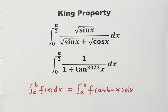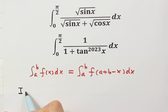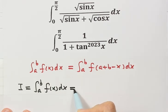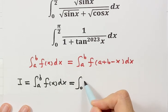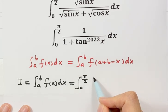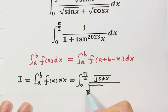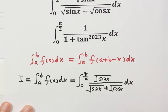Now let's see how to use the King Property to evaluate the first integral. We'll use i for the integral. The first question is the integral from zero to π/2 of √(sin x) divided by (√(sin x) + cos x) dx. We label this as Result 1.